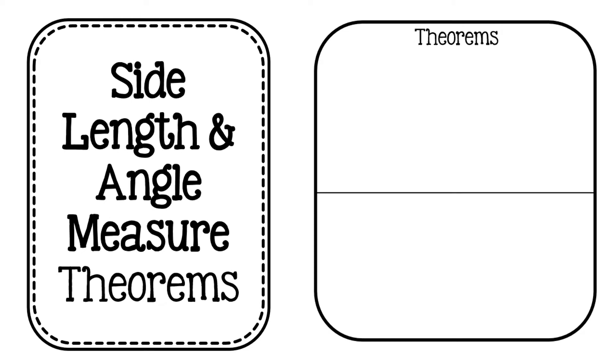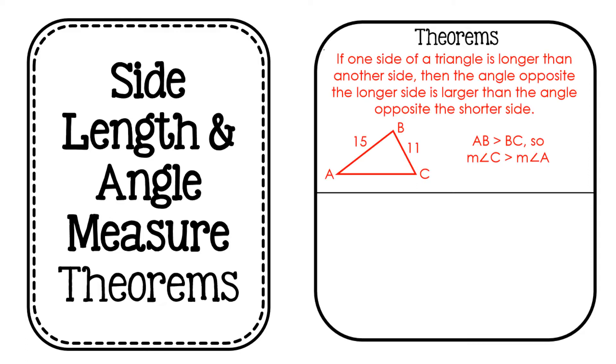The first theorem is the side length and angle measure theorem. So it reads, if one side of a triangle is longer than another side, then the angle opposite the longer side is larger than the angle of the shorter side, which only makes sense.